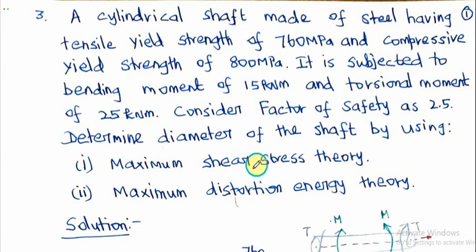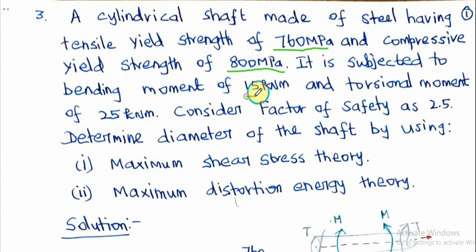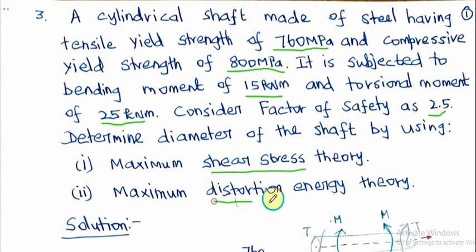Dear students, in this video we will cover bending moment, shear force, and shaft diameter using different theories. Let me read the problem: A cylindrical shaft made of steel has a tensile yield strength of 760 MPa and compressive yield strength of 800 MPa. It is subjected to a bending moment of 15 kNm and a torsional moment of 25 kNm, with a factor of safety of 2.5. Determine the diameter of the shaft using the maximum shear stress theory and maximum distortion energy theory.